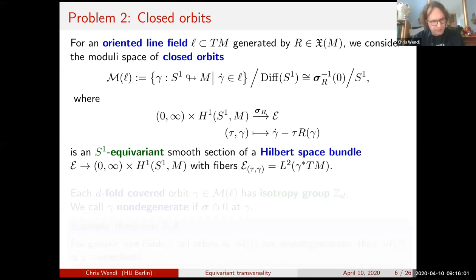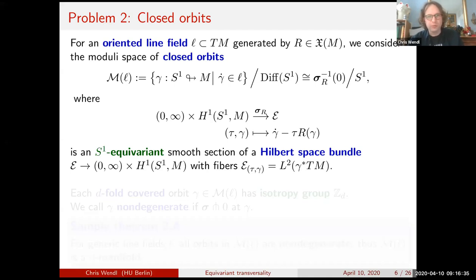We're talking about solutions of γ' − τ R(γ) = 0, i.e., orbits of R that are periodic with period τ. The period τ is included as a parameter, and you can present this as the zero set of a smooth section of a Hilbert space bundle: take the space of maps of Sobolev class H¹ from S¹ into M, with fibers being L² sections of the pullback tangent bundle. This is a smooth S¹-equivariant section. Orbits typically have isotropy groups under the S¹ action: if the orbit is d-fold covered, the isotropy group is Z/d. A standard definition: an orbit is non-degenerate if that section is transverse to the zero section at that orbit.